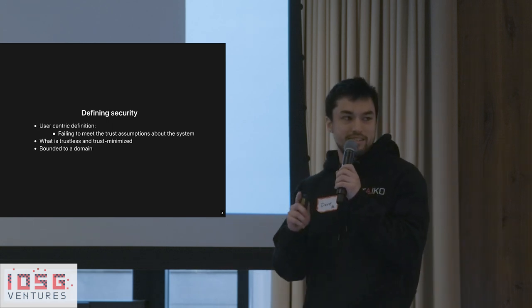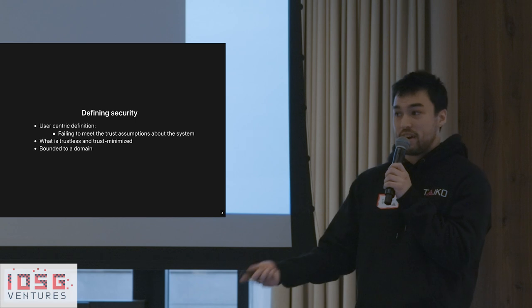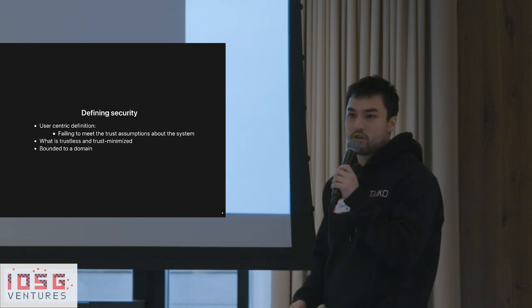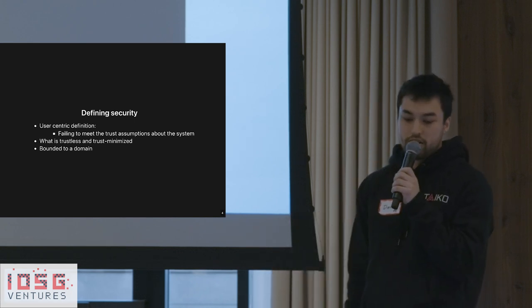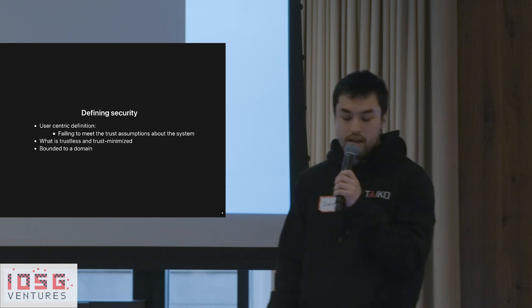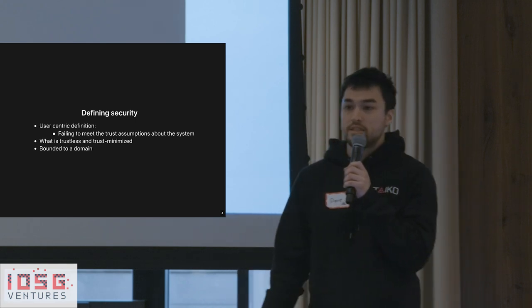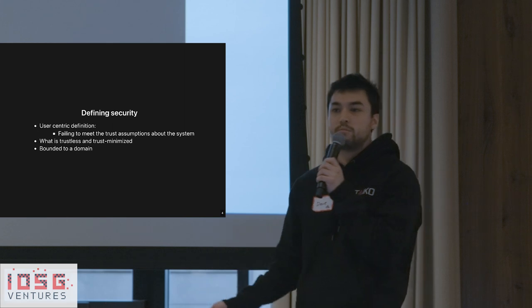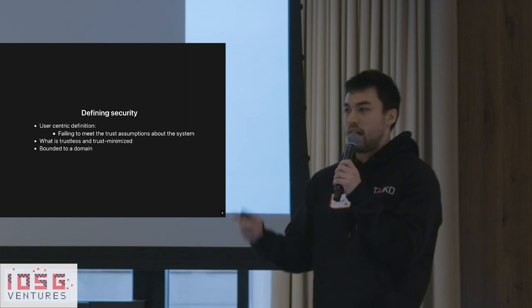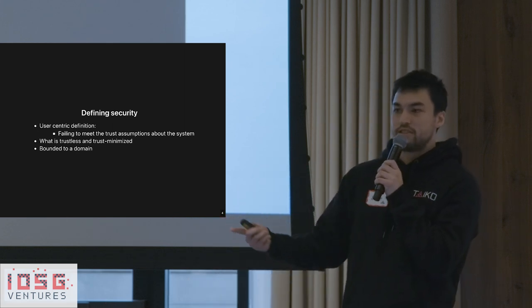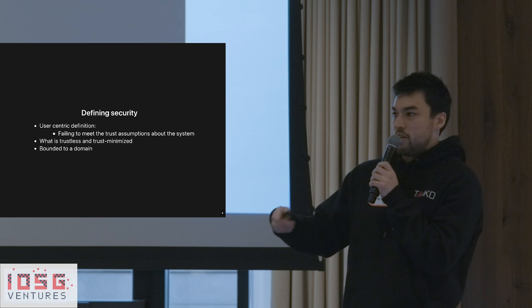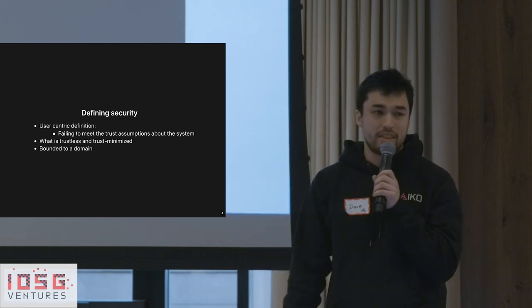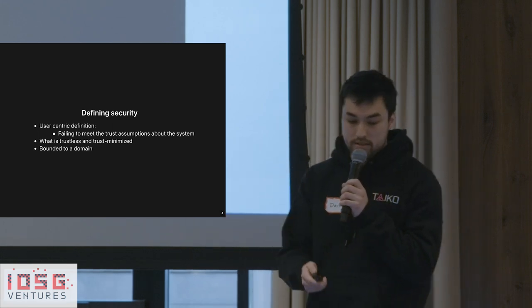I like to use more specific words. For example, "permissionless" is a better word than "trustless" to describe the ability for anyone to enter into a system. I also like "trust-minimized" because it encourages us to list out the trust assumptions to users — like, you need to make sure that the proof is valid. We'll go into more details later, but it's very important we get these terminologies right.